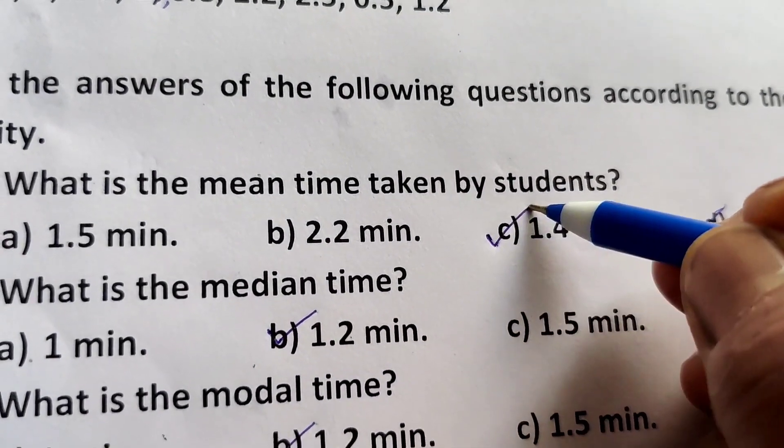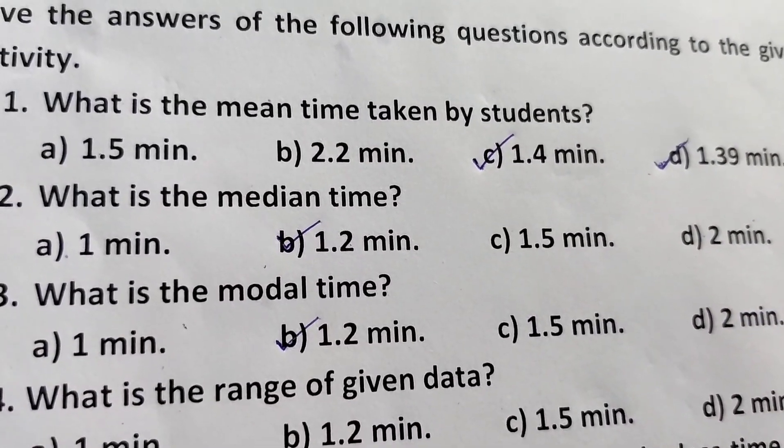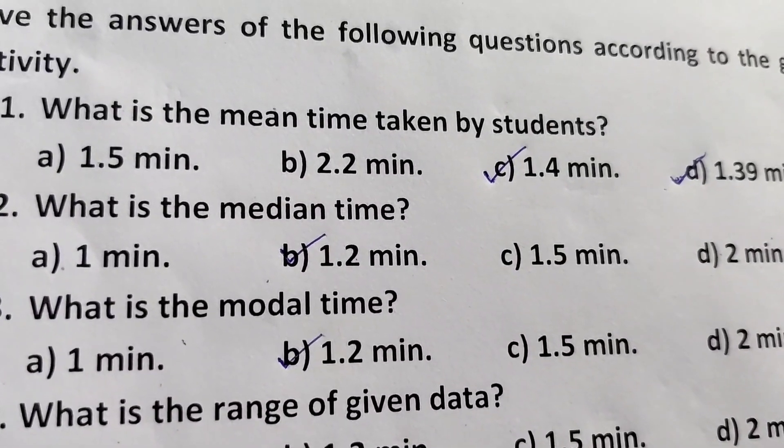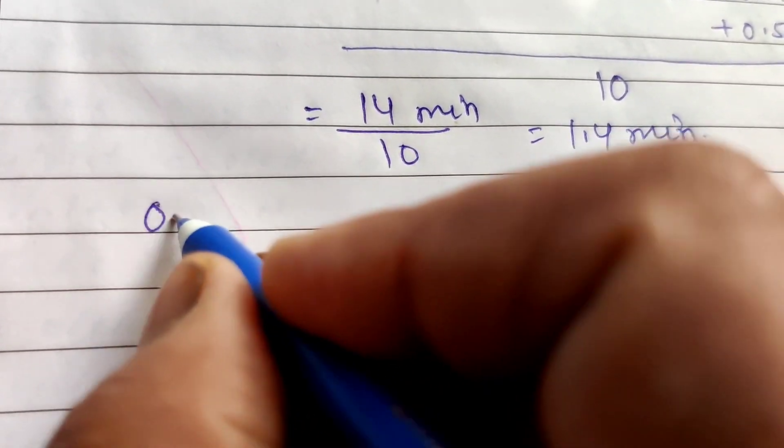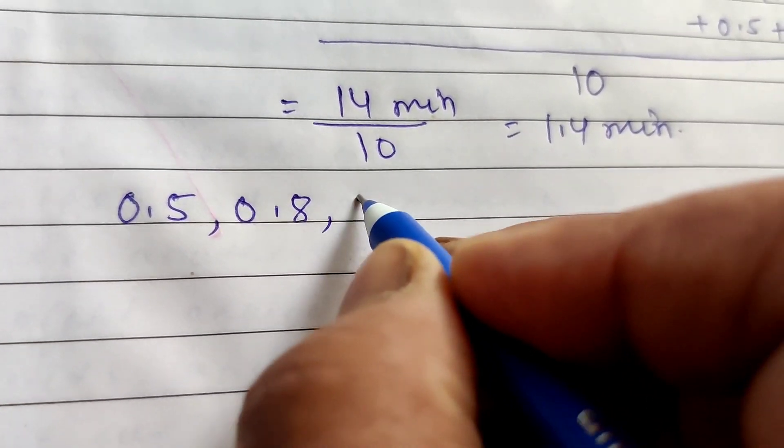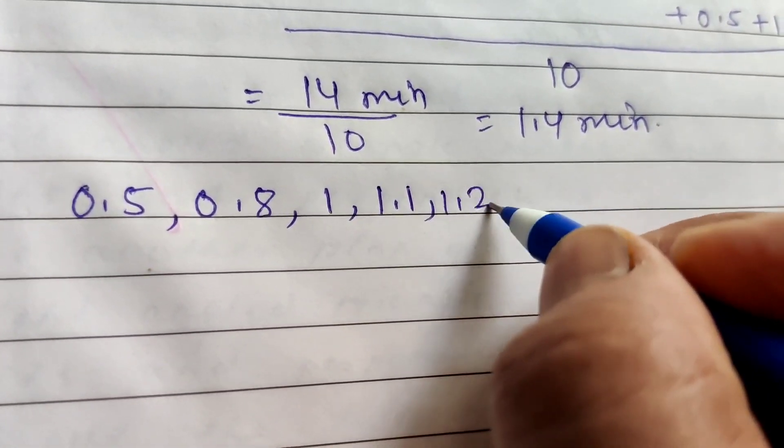Next, what is the median time? How to find median? First arrange the data in ascending form. The lowest time is 0.5, next 0.8, then 1 minute, 1.1 minutes, 1.2 minutes, 1.2 minutes, next 1.5, 2 minutes, 2.2 minutes, and 2.5 minutes.